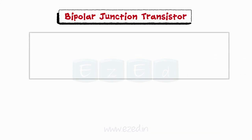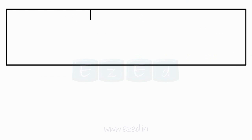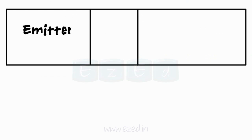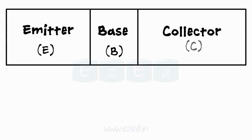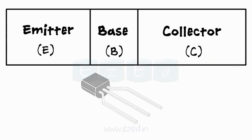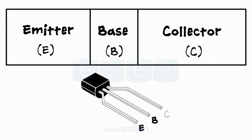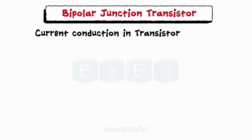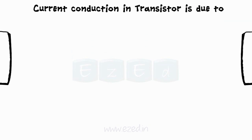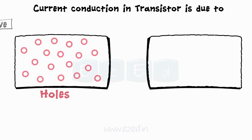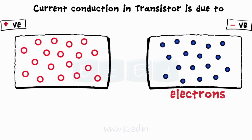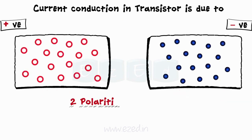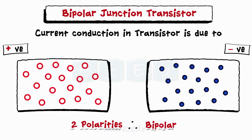A BJT is a silicon or germanium crystal containing three separate regions: emitter, base, and collector. Thus we obtain a three-terminal device. The current conduction in BJT is due to two types of charge carriers — holes and electrons. Hence, it is called the bipolar junction transistor.